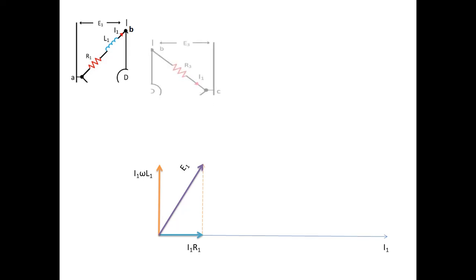The next arm, BC, is a purely resistive circuit. So the voltage here, which is equal to I1 into R3, which is equal to E3, will also be along the x-axis. That is, it will be in phase with the current I1. We have E3 equal to I1 into R3.